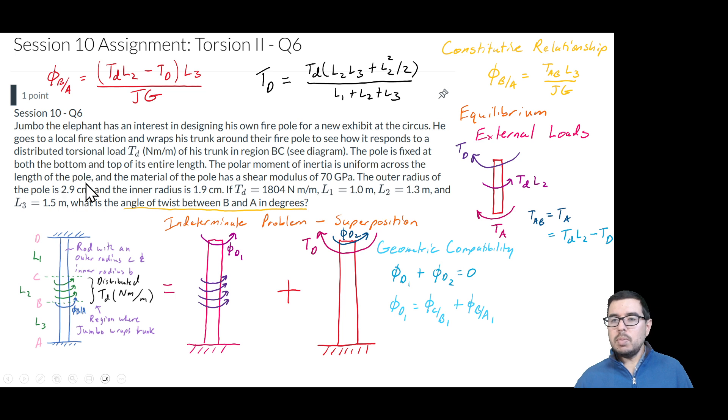And there's one thing we have not calculated, which is J. So, if you read this problem, and I didn't read the whole problem before we started. It says that we have a polar moment of inertia that's uniform across the length of the pole and the material of the pole has a shear modulus of 70 gigapascals. Great. So, that's going to be the G. The outer radius of the pole is 2.9 centimeters, and the inner radius is 1.9 centimeter.